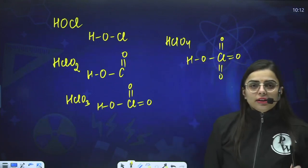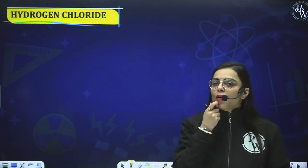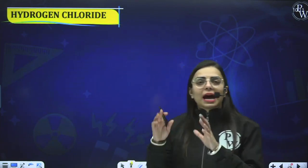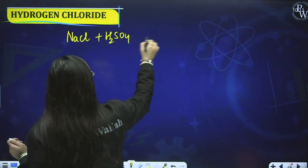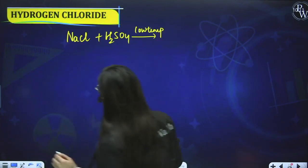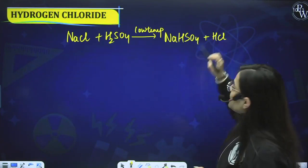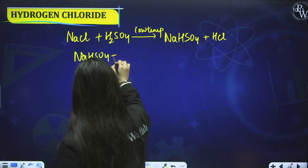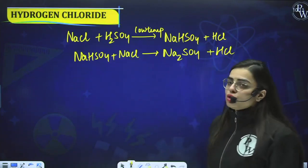Now the last segment of Group 17 — Hydrogen Chloride. The best method of preparation is reacting NaCl with H2SO4 at low temperature, giving NaHSO4 and HCl. This NaHSO4 can further react with NaCl to form Na2SO4, liberating more HCl. The HCl gas can be dried by passing it through concentrated sulfuric acid, which acts as a dehydrating agent, removing water so that pure HCl gas is obtained.